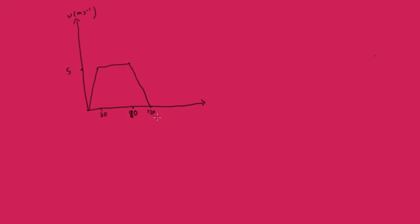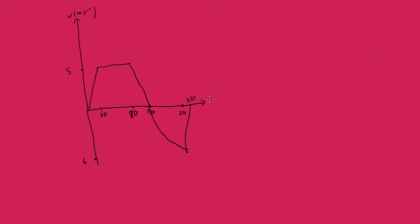Then the athlete returns to his starting point, so now we're going to be going in a negative velocity. He increases his speed quickly at the start and then continually tries to increase his speed for 90 seconds — from 120 to 210. So it's going to be a curve. The maximum speed he reaches is 6 metres per second. He then slows down for 10 seconds before coming to rest at the start, so it'll be 220. This is time in seconds.